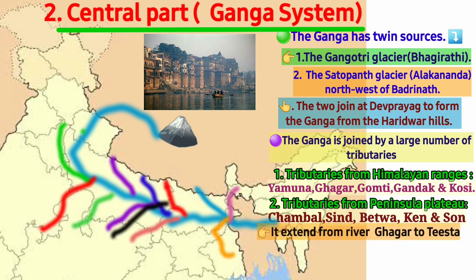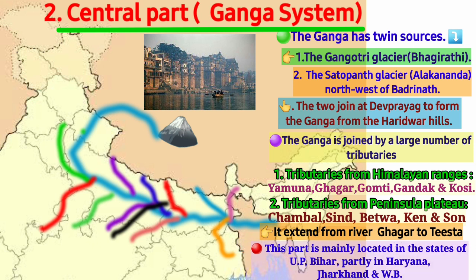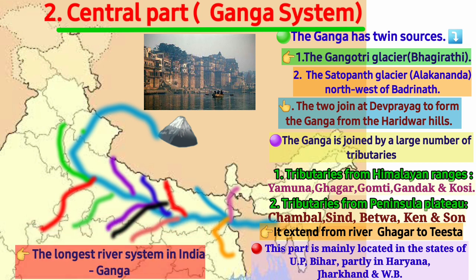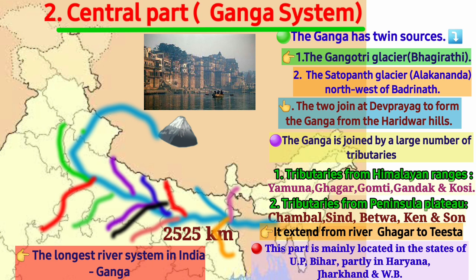Ganga extends from River Ghaggar to Tista in Sikkim, flowing partly through Haryana, Uttar Pradesh, Uttarakhand, Bihar, Jharkhand, and West Bengal. The longest river in India is the Ganga, about 2525 kilometers in length. When the River Ganga enters Bangladesh, it is known as Padma.